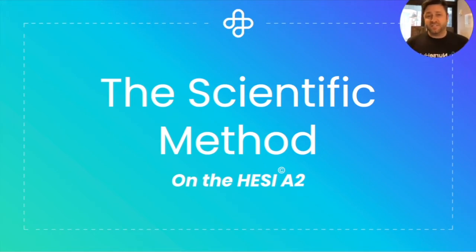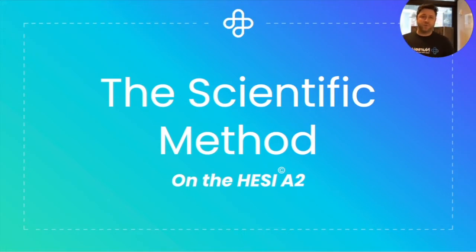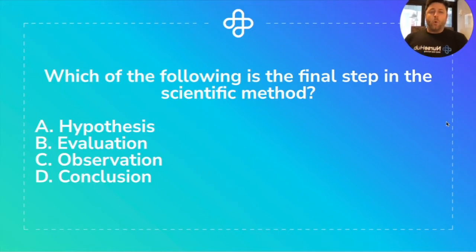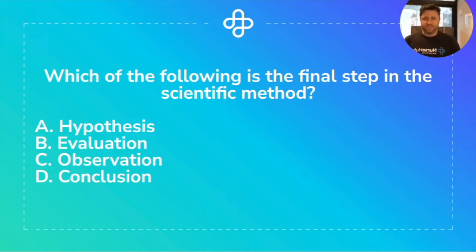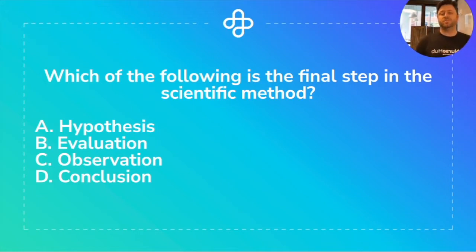Today's question of the day is on the scientific method. It's from the biology section of the HESIA2. And the question is: which of the following is the final step in the scientific method? Is it A, hypothesis; B, evaluation; C, observation; or D, conclusion?